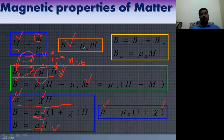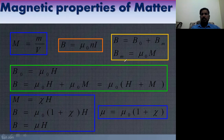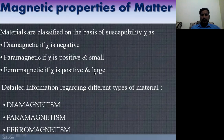The key equations to remember: B = μ₀NI for a solenoid, B = B₀ + Bₘ where Bₘ = μ₀M, and M = χH. If chi is large, magnetization is large. Also, μ = μ₀(1 + χ). These are very important equations to remember.